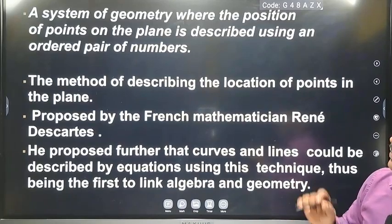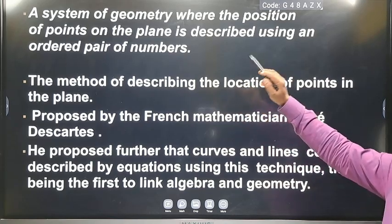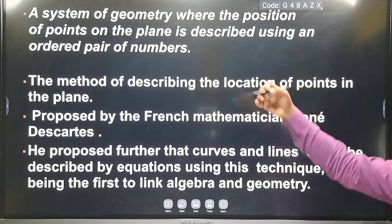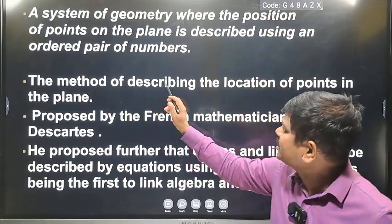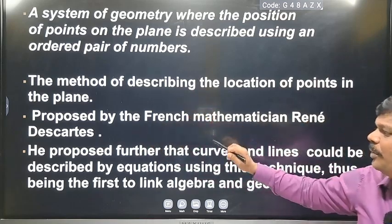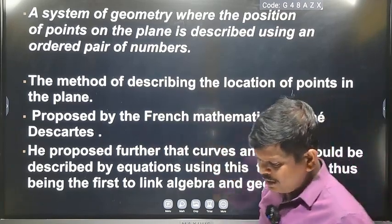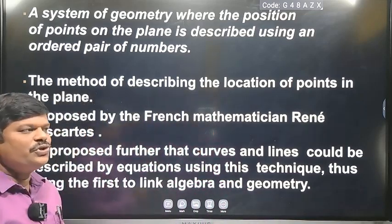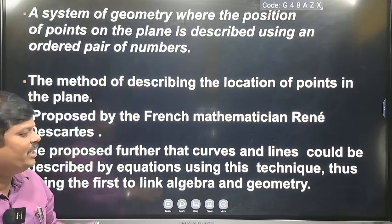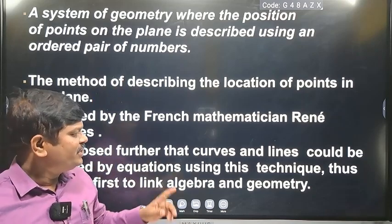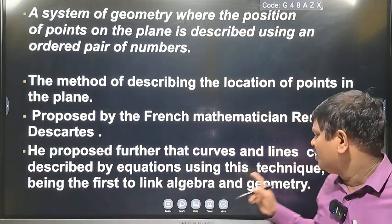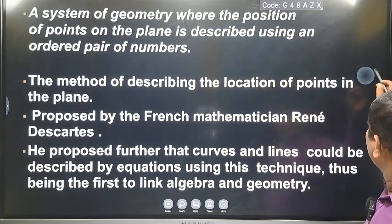The system of geometry where the position of an object on a plane is described using an ordered pair of numbers is called coordinate geometry. This concept was proposed by the French mathematician René Descartes. When he was lying in bed, he thought about how to express the position of an object. He gave the concept we call coordinate geometry. He proposed that curves and lines could be described by equations using algebraic techniques, thus being the first to link algebra and geometry.